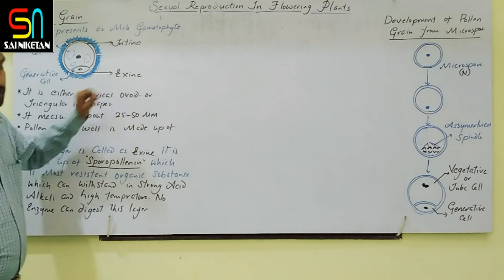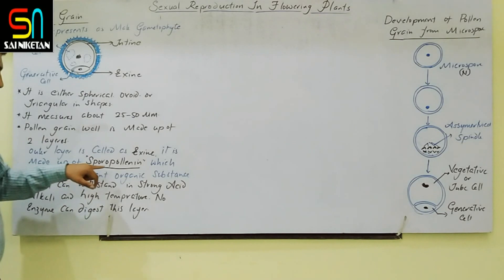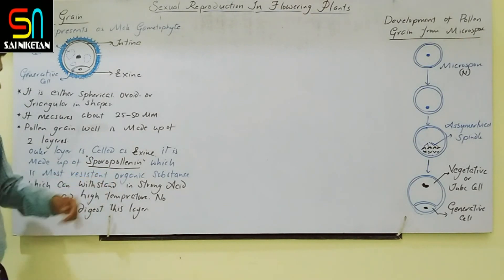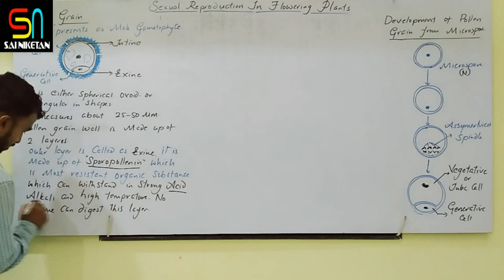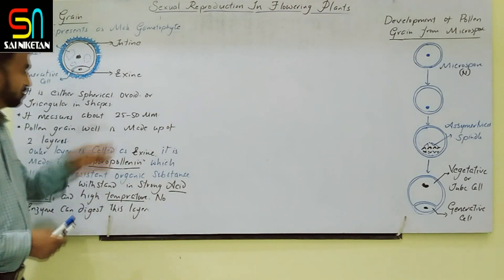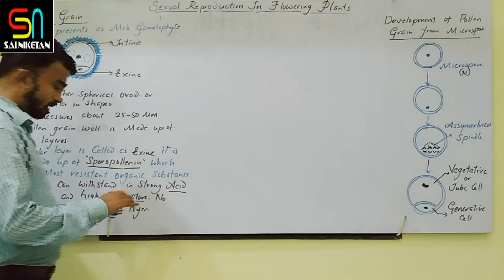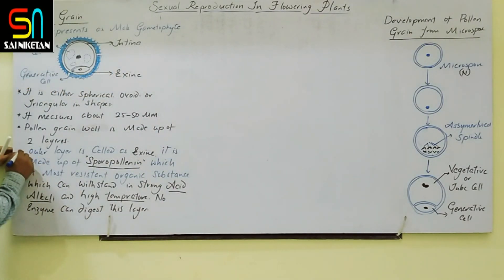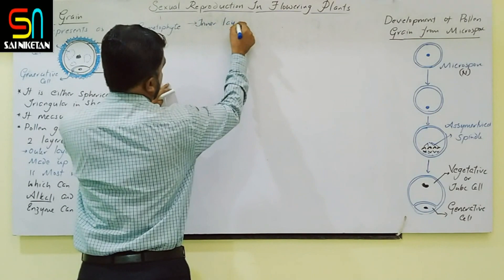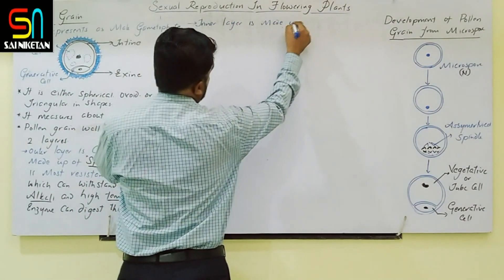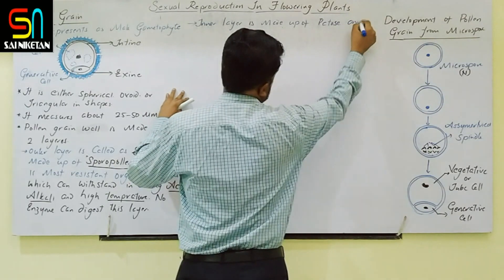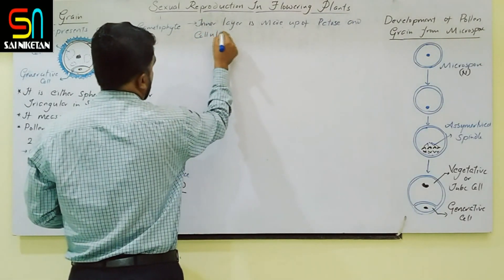Functionally, the exine is very important. The outer exine layer is made of sporopollenin, the most resistant organic substance, which can withstand strong acid, strong alkali, and high temperature, and cannot be digested by any enzyme. That is why pollen grains can be preserved in fossil zones. The inner intine layer is made up of pectin and cellulose, and is elastic in nature.